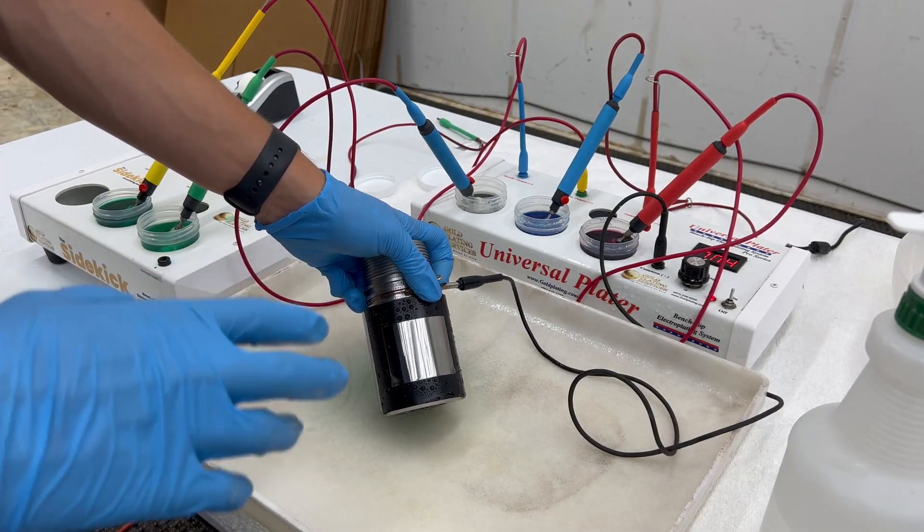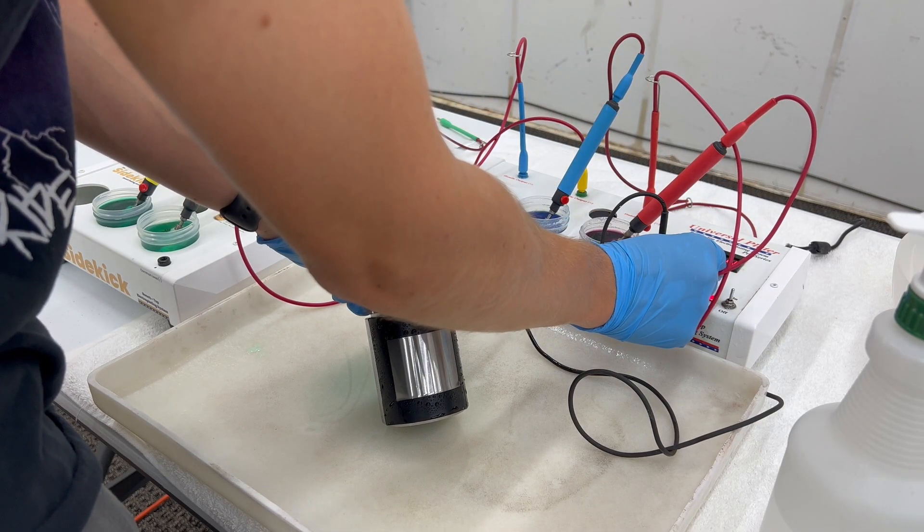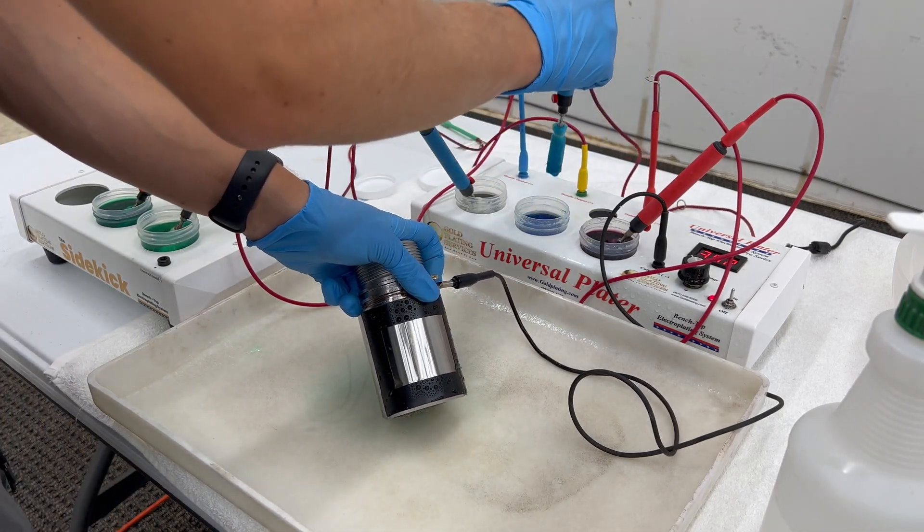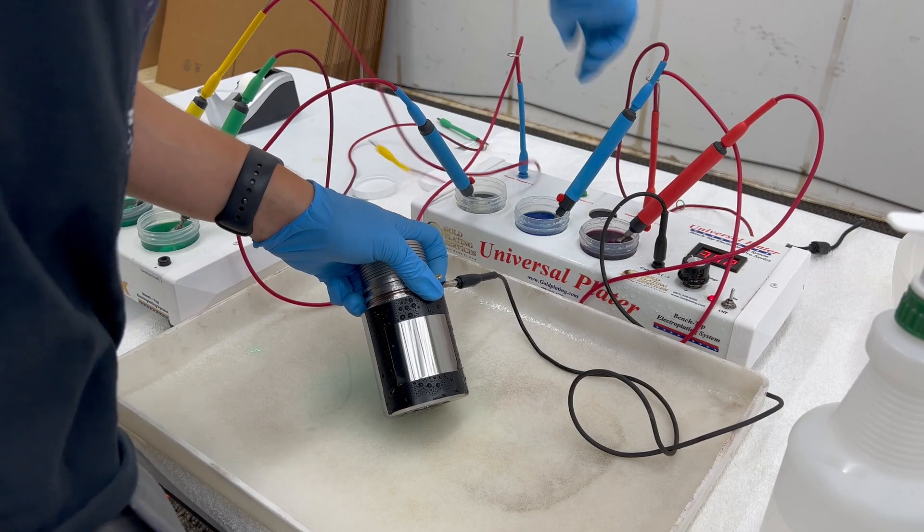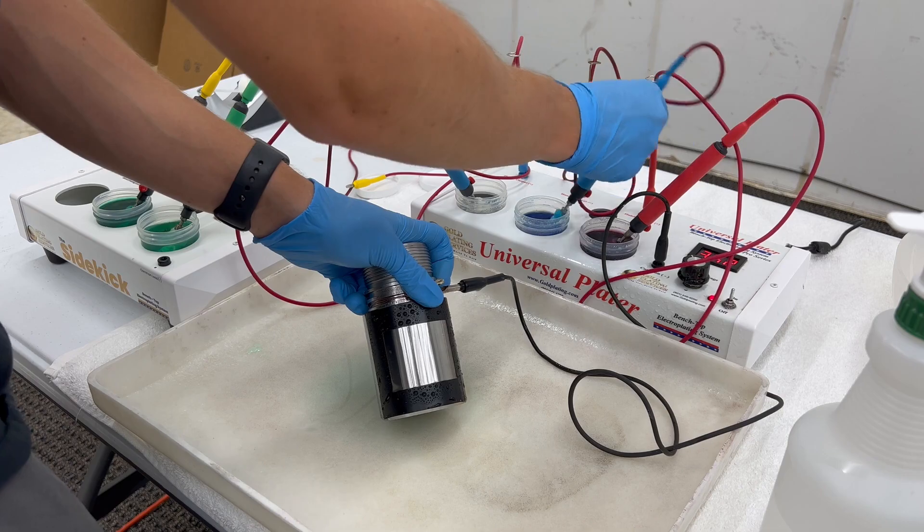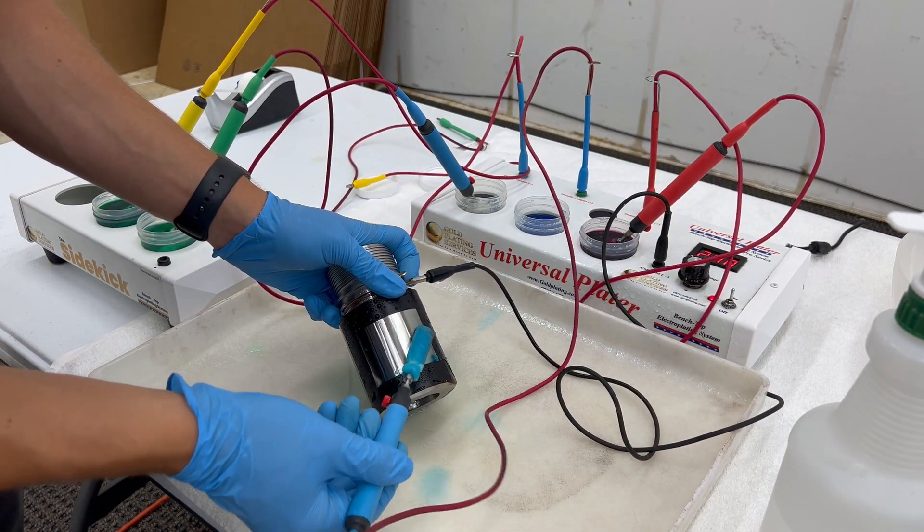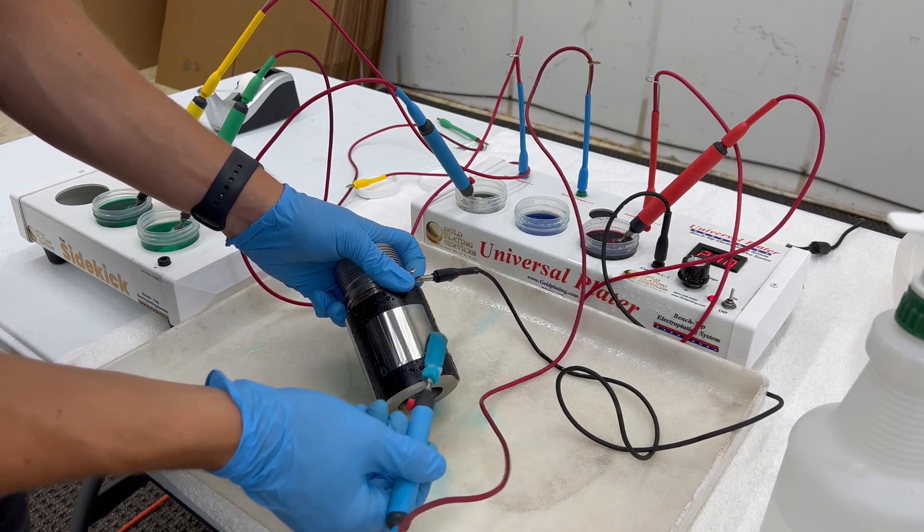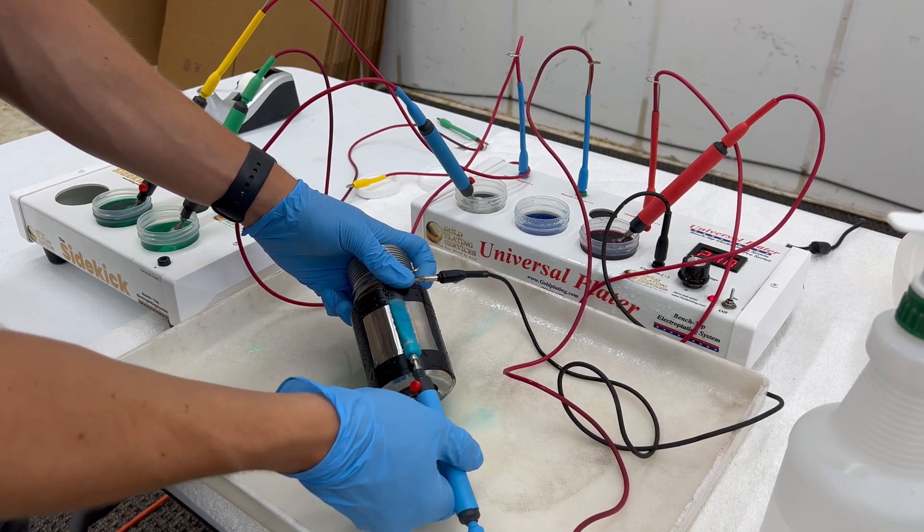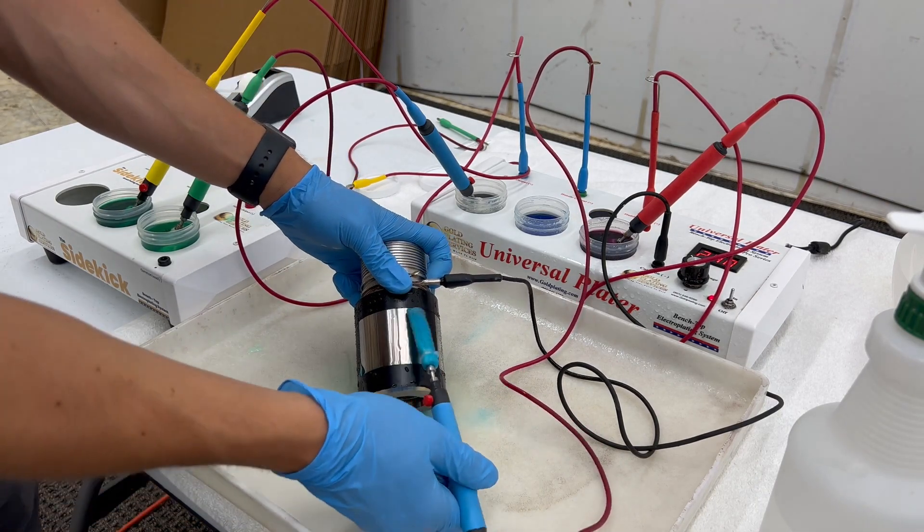Now we are going to go into the process of copper striking it, so I'm going to turn our voltage down to three and a half. I'll get our copper strike and I'll start plating our area. This does take a little bit of time to plate onto it, but you can see it starting to plate onto it.